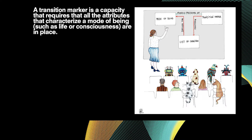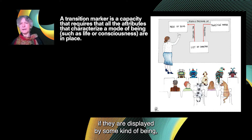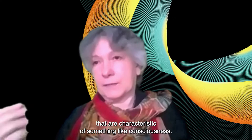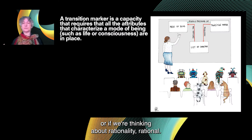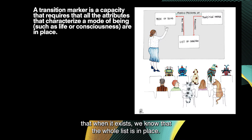Here is the idea of a transition marker. What Ganti did for the question of the origin of life was to find a list of capacities that everyone would agree, if displayed by some kind of being, are markers of — in his case — life. It can be a list of capacities characteristic of consciousness. It has to be sufficient for us to say: if somebody has this list of capacities, this being is alive, conscious, or — if we're thinking about rationality — rational. The next stage is to find a single tractable capacity that, when it exists, tells us the whole list is in place.